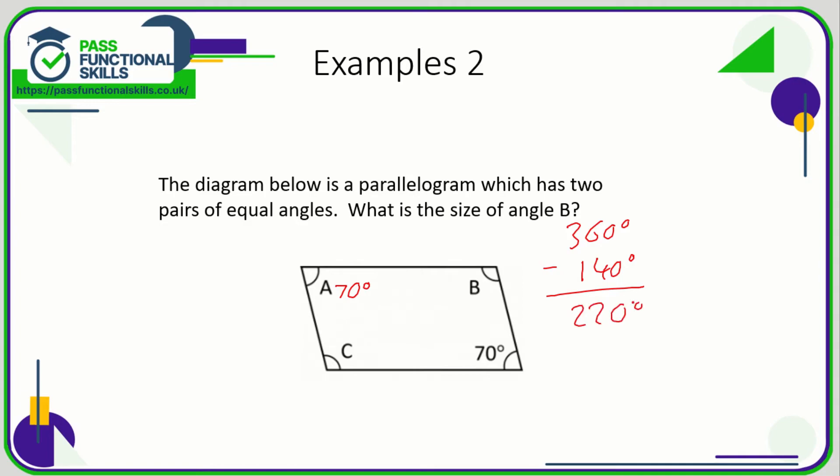So angles C and B equal 220, but C and B are the same. So if we divide 220 by 2, we can work out angle B and angle C. And 220 degrees divided by 2 is 110. So C is 110 and B is 110. So what is the size of angle B? 110 degrees.